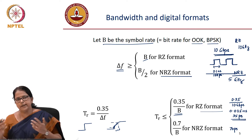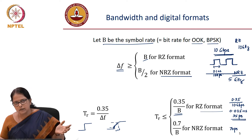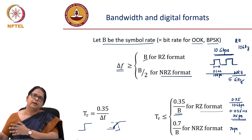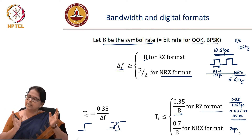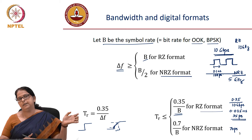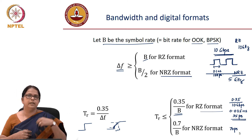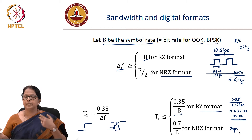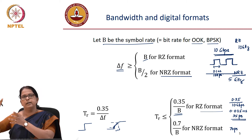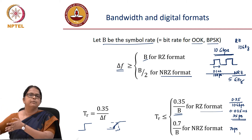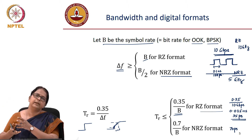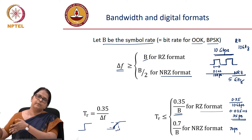The next question is how do I calculate the total allowed rise time. I have a transmitter, a fiber, and a receiver. A transmitter has a certain bandwidth depending on whether I am using an LED or a laser, or whether I am using direct modulation or external modulation. The receiver, depending on the response time and the time taken by the electron to move through the carrier, has a certain response time.